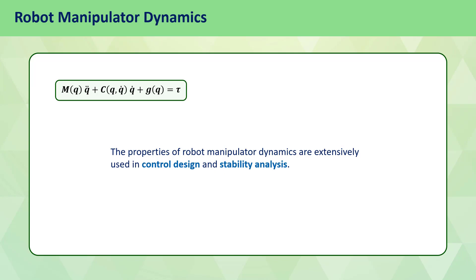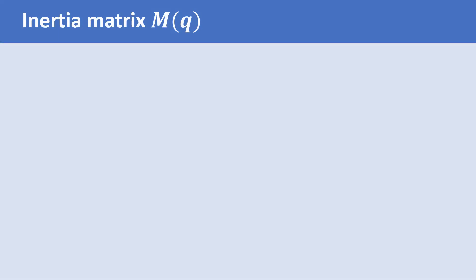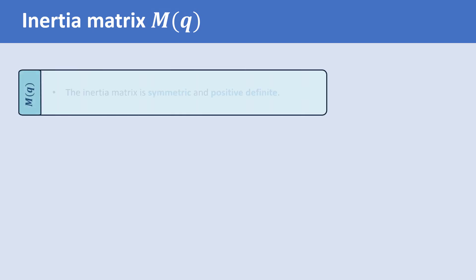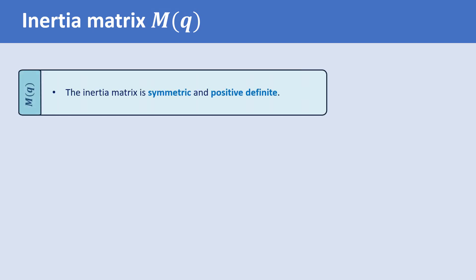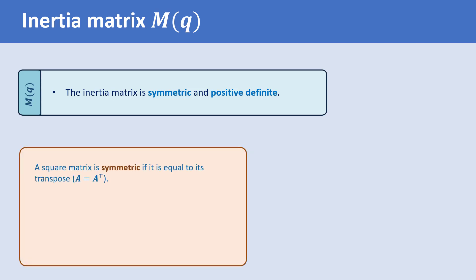Let's start with the inertia matrix M. An important property of this matrix is that it is symmetric and positive definite. A matrix is symmetric if it is equal to its transpose. For example, this matrix is a 3 by 3 symmetric matrix.